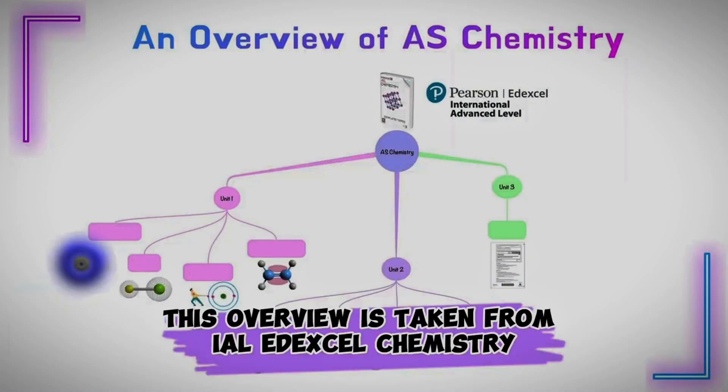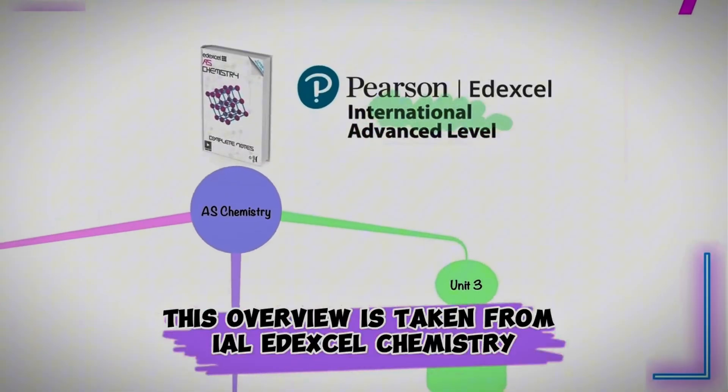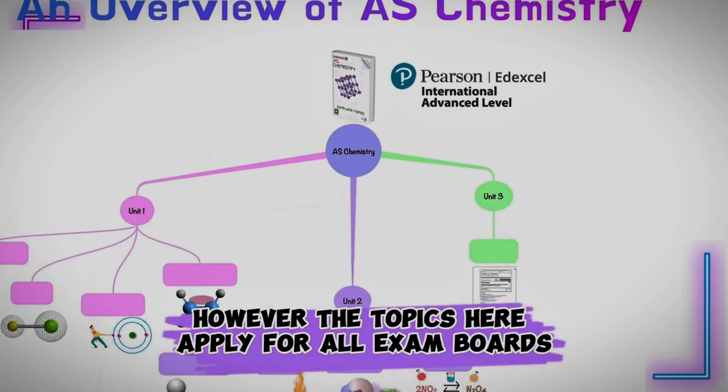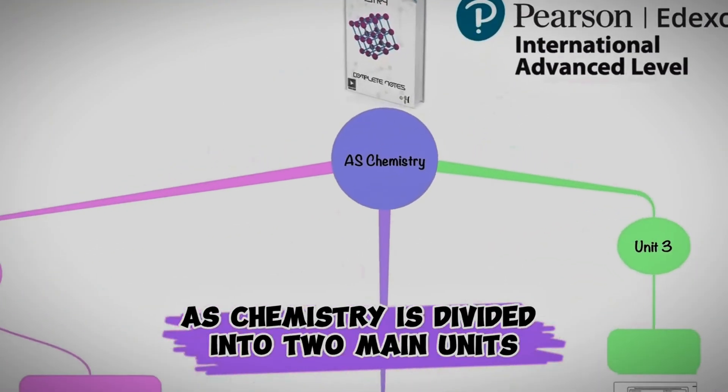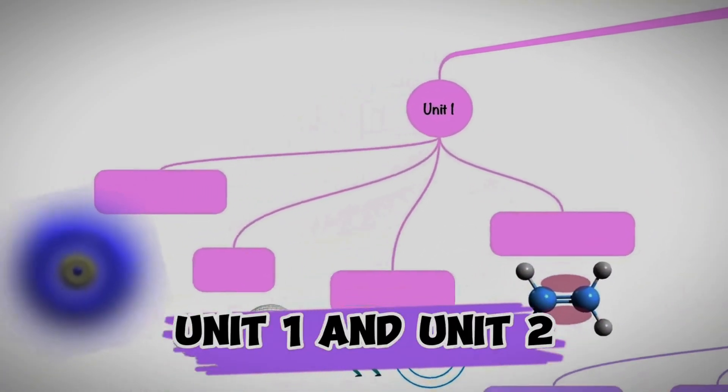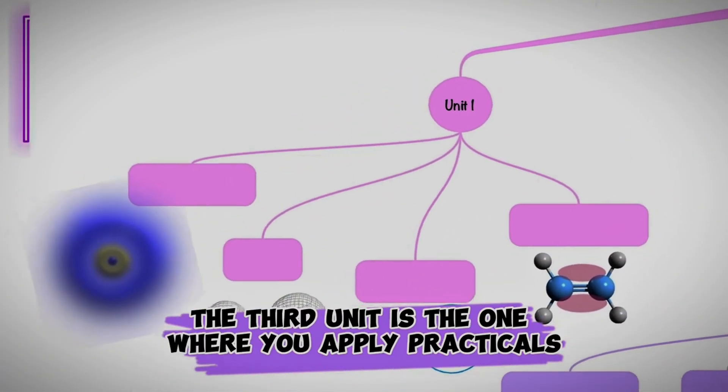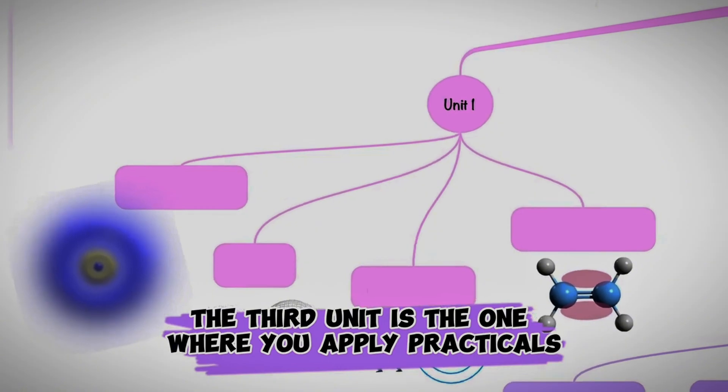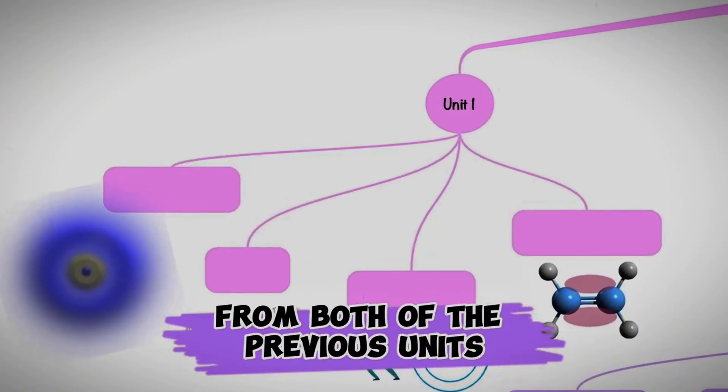This overview is taken from IAL Edexcel Chemistry. However, the topics here apply for all exam boards. AS Chemistry is divided into two main units, unit 1 and unit 2. The third unit is the one where you apply practicals from both of the previous units.